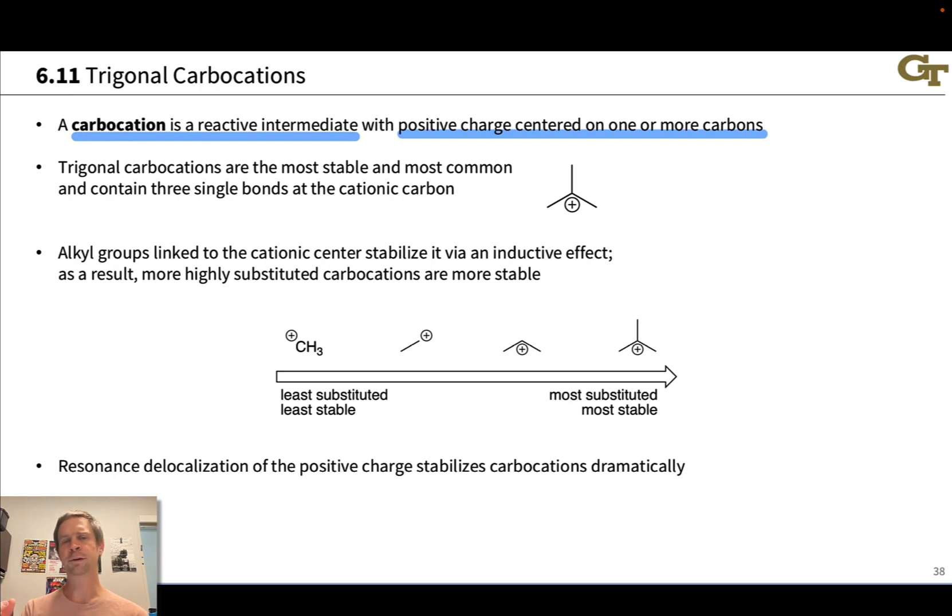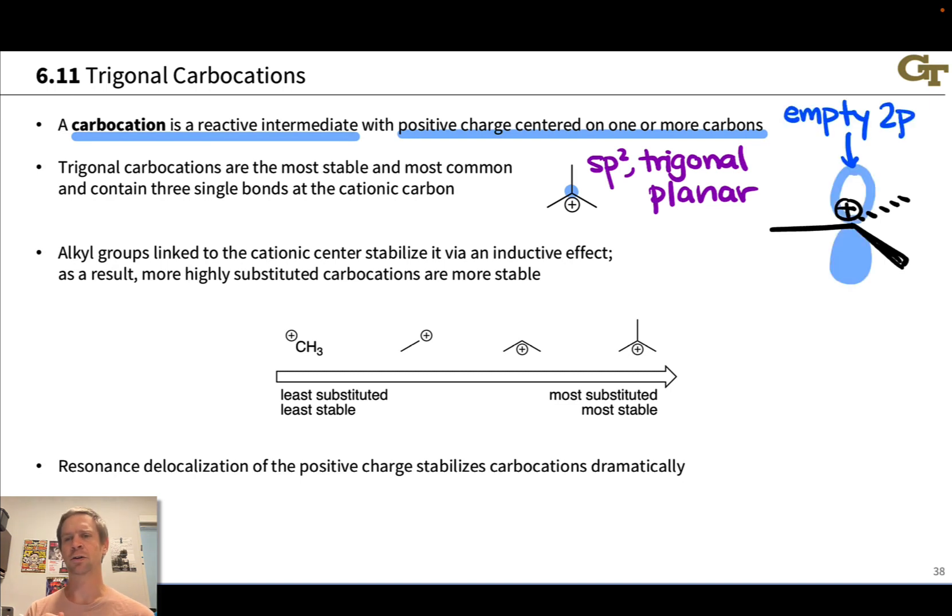This makes the hybridization of that carbon sp2 and leads to trigonal planar geometry. This also leads to an empty 2p orbital at the cationic carbon. This is very important because that empty 2p orbital is a site of electrophilicity. When a nucleophile comes along, it bumps right into that empty 2p orbital to form a new bond to the cationic center.